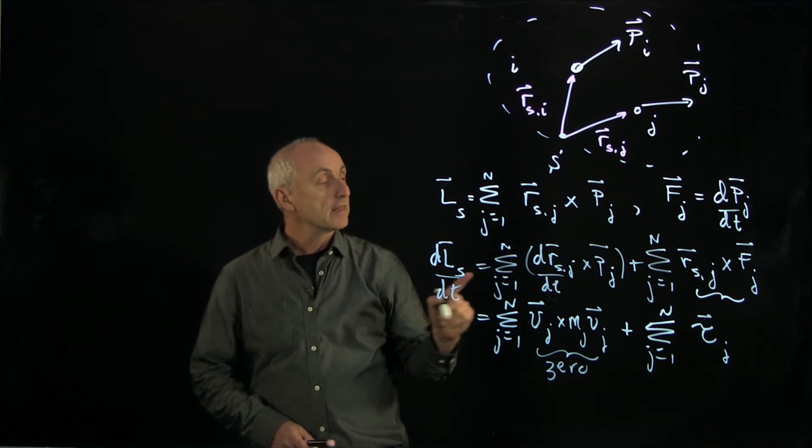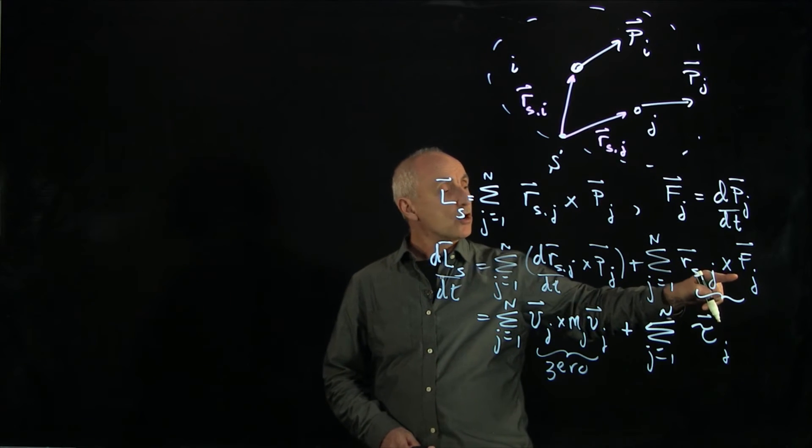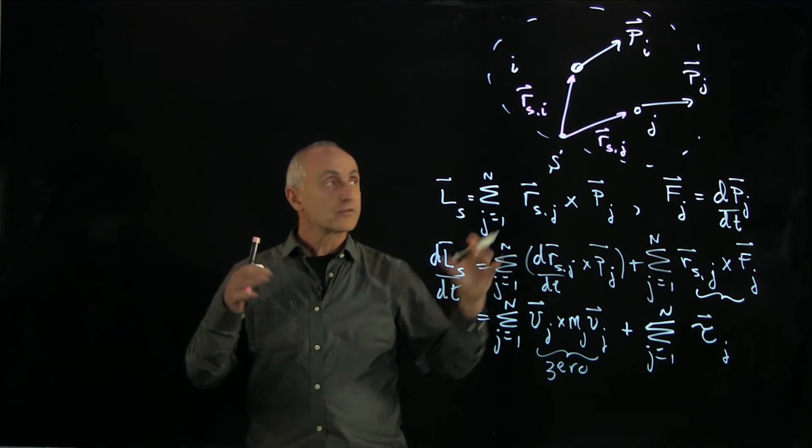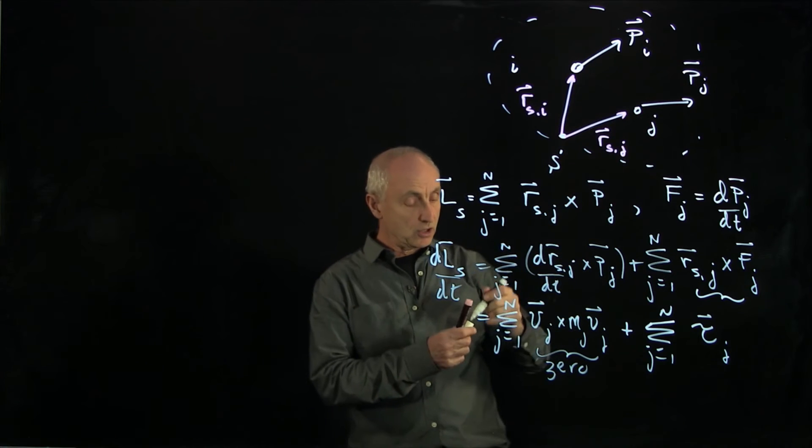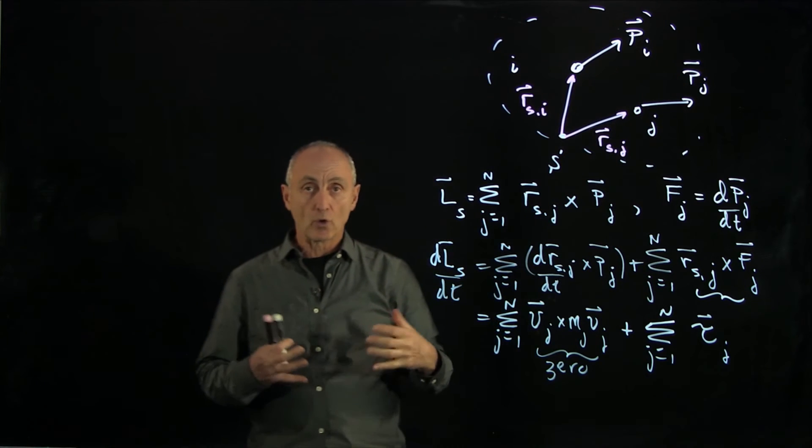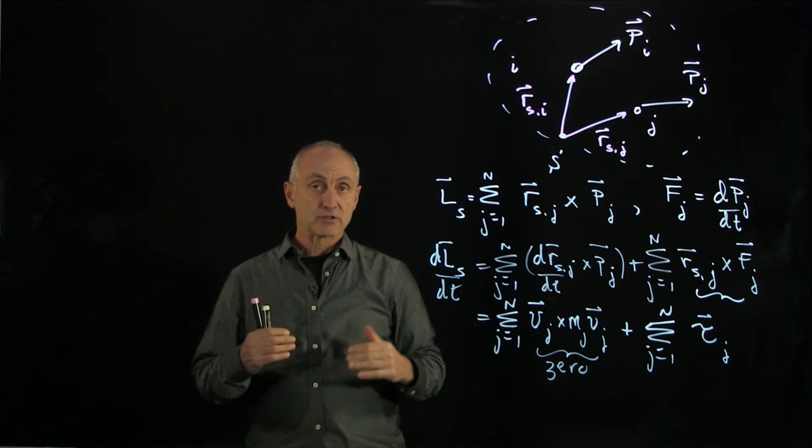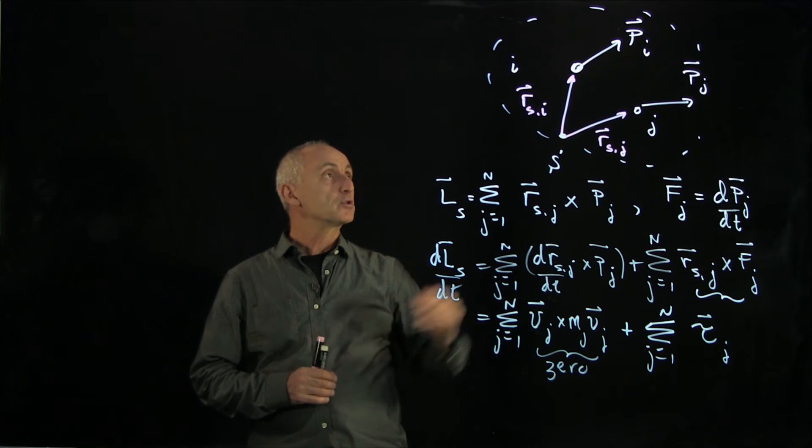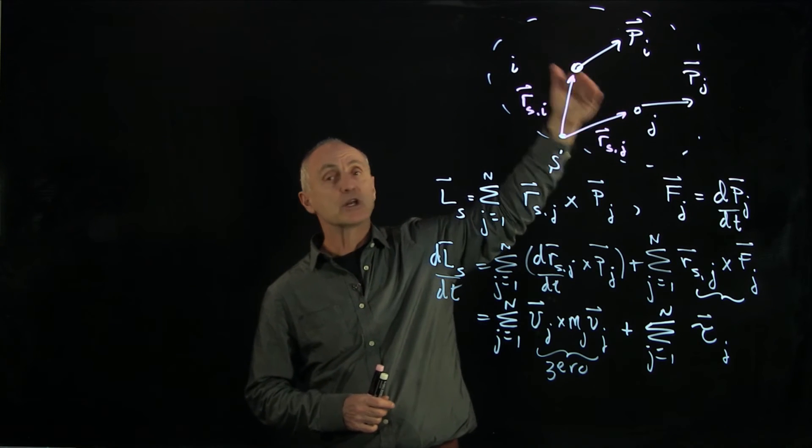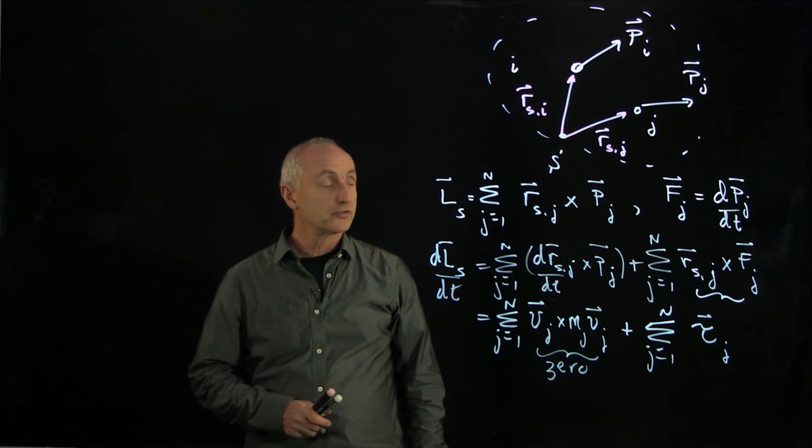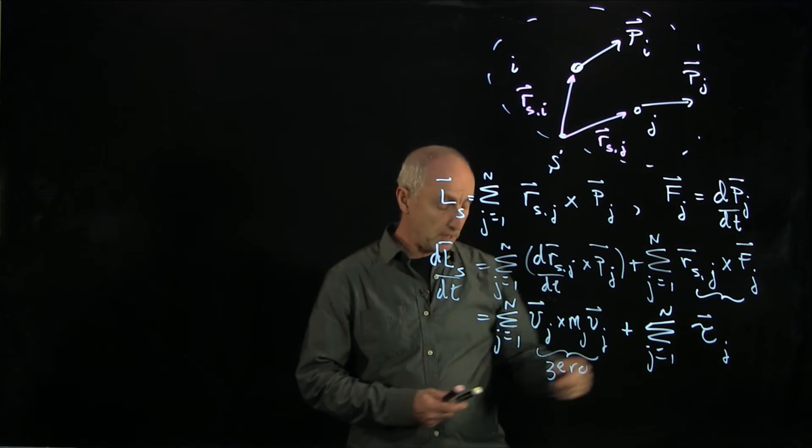Now, remember that we showed that the forces on the j-th particle could be both due to internal or external forces. And as long as the internal forces pointed between two particles, pointed along the line connecting those particles, the internal torques cancel in pairs.